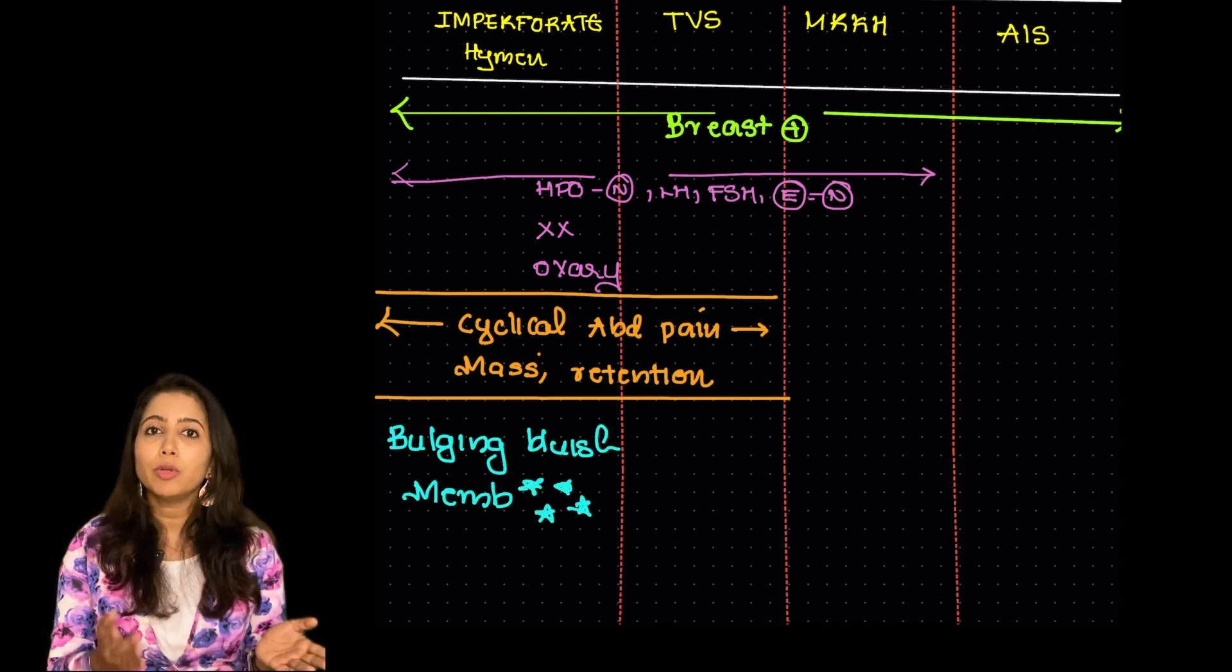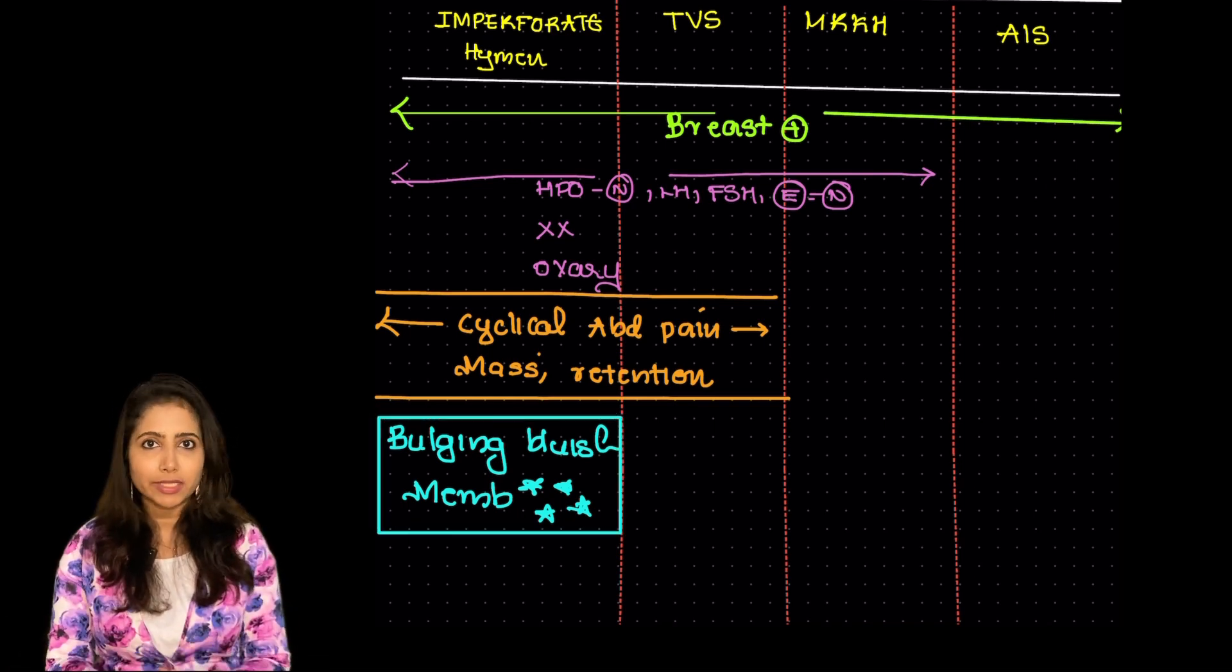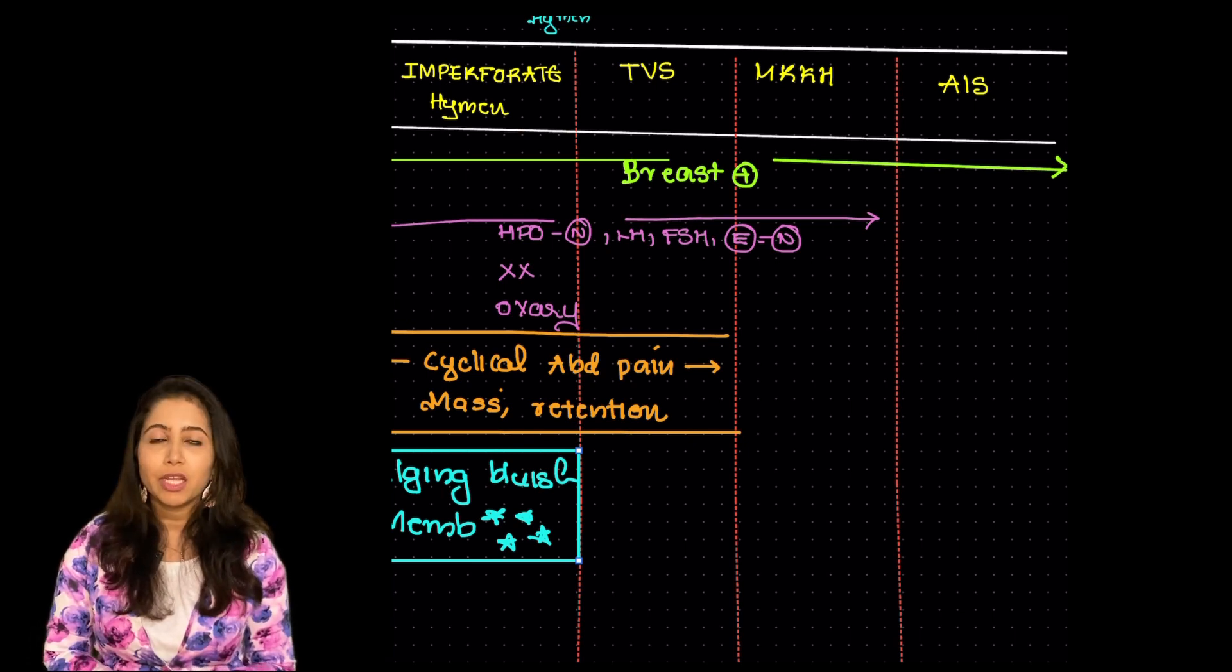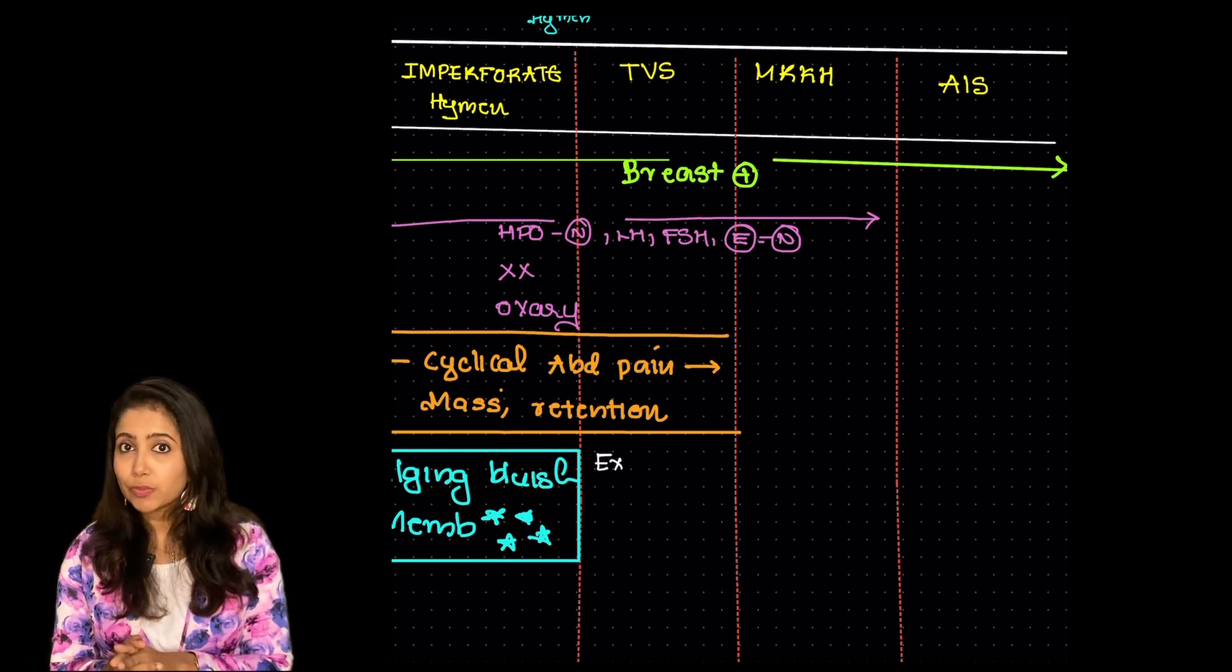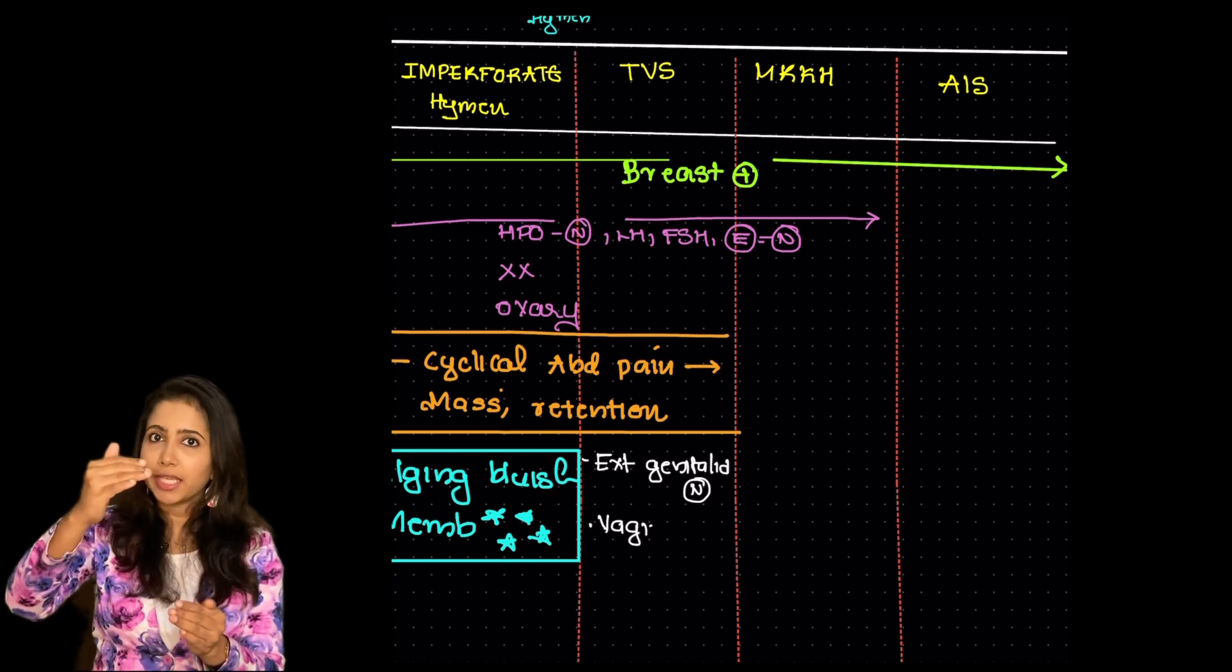Sometimes this can lead to retention of urine as well. How to differentiate these two? So in case of an imperforate hymen you can see a bulging bluish membrane. Very important bulging bluish membrane which slightly increases on size on valsalva is typical of an imperforate hymen.